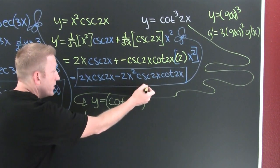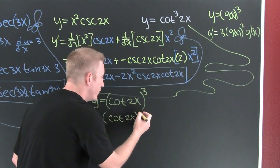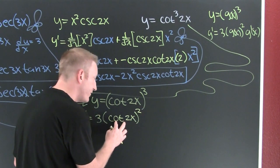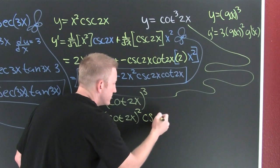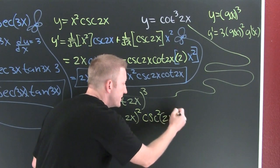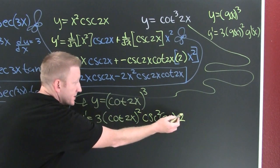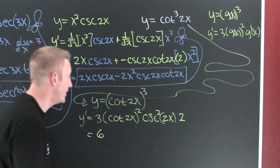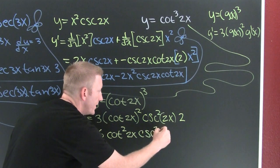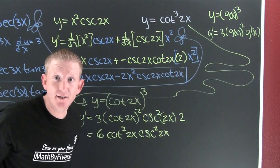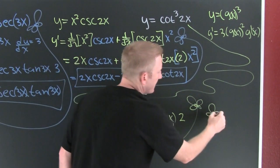y prime: take the derivative of the outside — 3 times cotangent(2x) to the second — then multiply by the derivative of the inside. The derivative of cotangent is negative cosecant squared of the argument 2x, times the derivative of the argument, which is 2. Cleaning up: 3 times 2 is 6, negative, giving us negative 6 times cotangent²(2x) times cosecant²(2x).